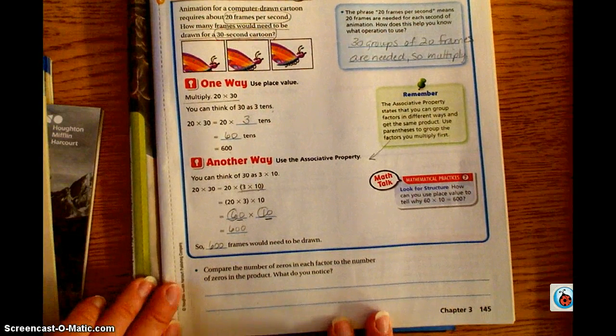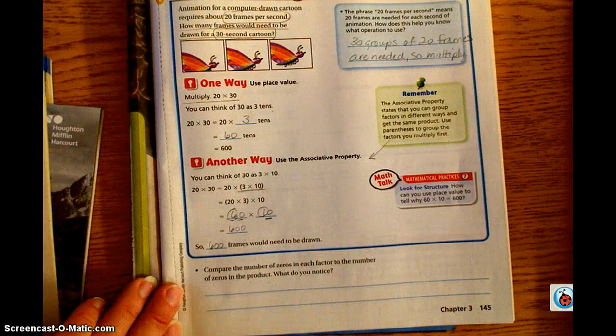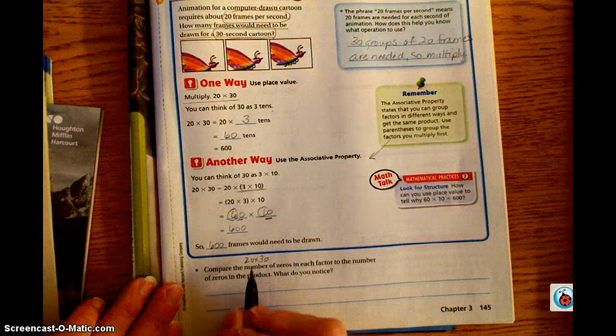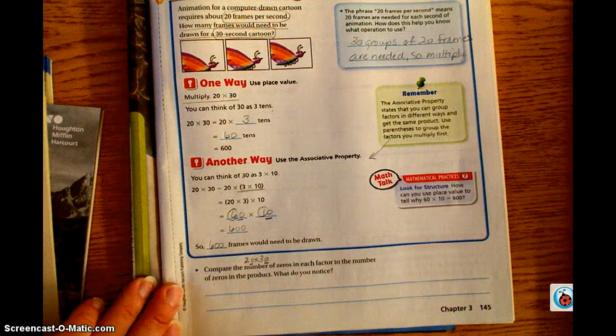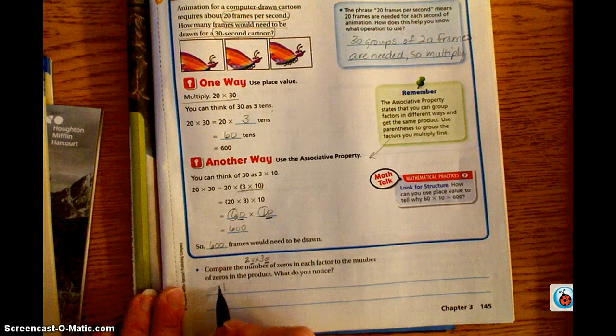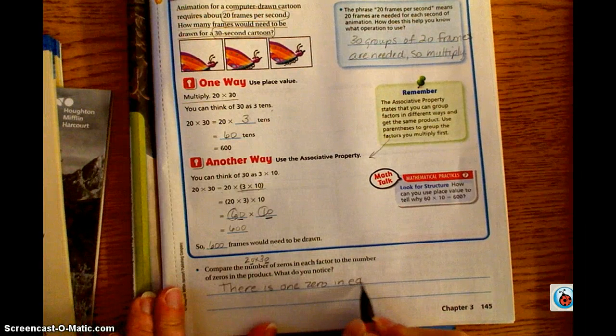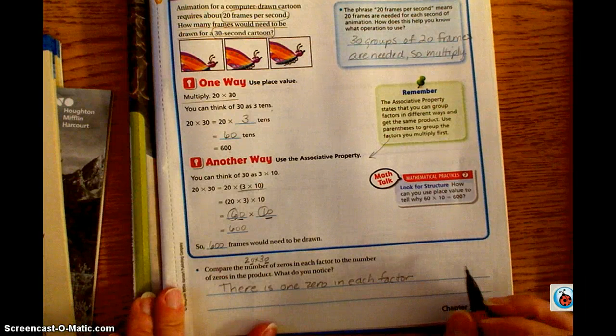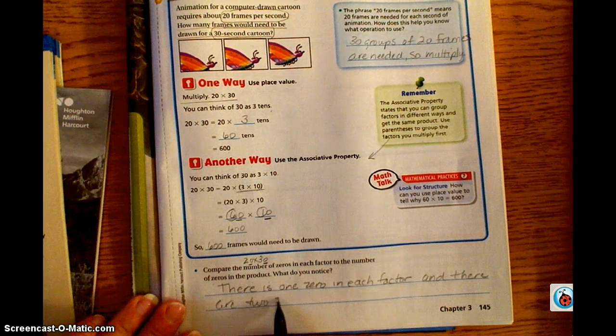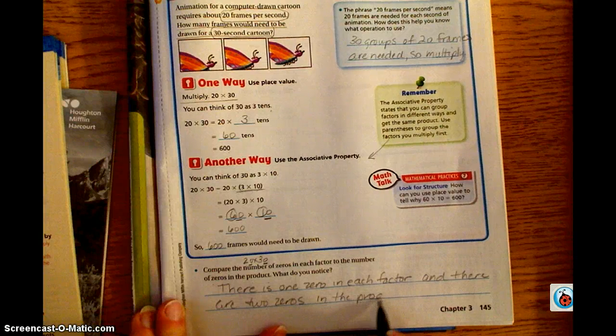Down here, our extended thinking, we have compare the number of zeros in each factor to the number of zeros in the product. What do you notice? If we look back up here, our problem was 20 times 30. We notice that in each factor there was one zero, and then in our final product there were two zeros. There is one zero in each factor, and there are two zeros in the product.